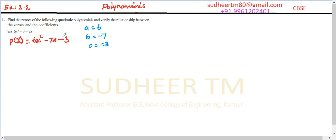Now the product we need to consider to split the middle term is minus 3 into 6, which is 18. So the product P is equal to 18, and the factors are 2 into 9, or 3 into 6.